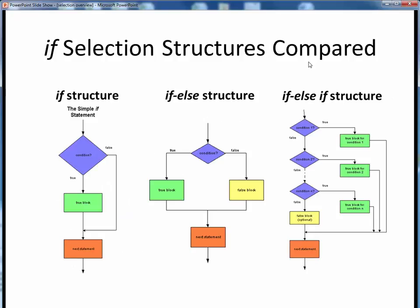In this diagram, we see a comparison of the three possible if-selection structures: if, if-else, and if-else-if. These are all examples of simple flowcharts, arranged in order from left to right, from the simplest, most basic form on the left to the most general form on the right.